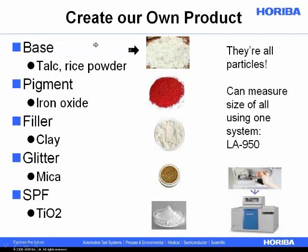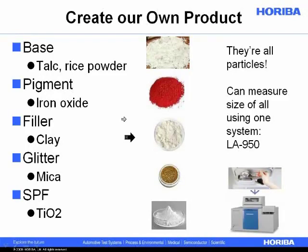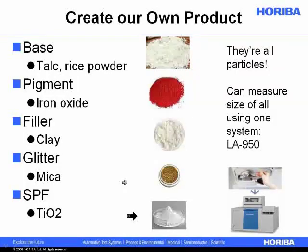We'll start with a base, and instead of using talc, maybe I'll use something like rice powder. If we want to change the color of the skin, we could add a pigment — maybe iron oxide. I might use a filler such as clay to fill in some of the pores. I might decide I'd like a little glitter, using some coated mica. And since I'm a fair-skinned person, I always like to wear sunscreen, so maybe I'll use titanium dioxide to add some SPF.